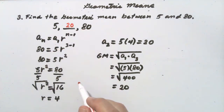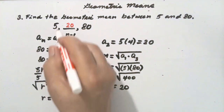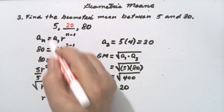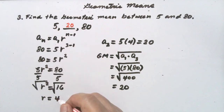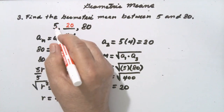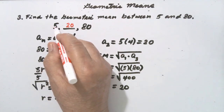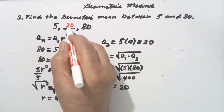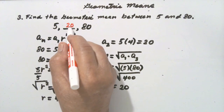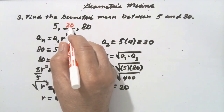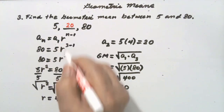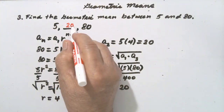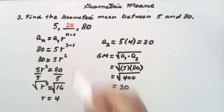To check: multiply the first term by the common ratio — 5 times 4 is 20, and then 20 times 4 is 80. Verified.